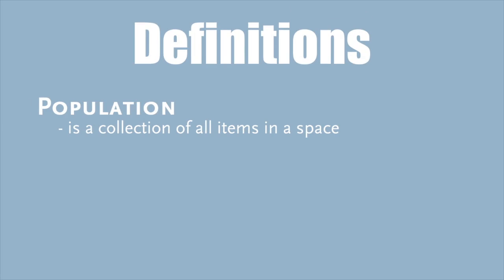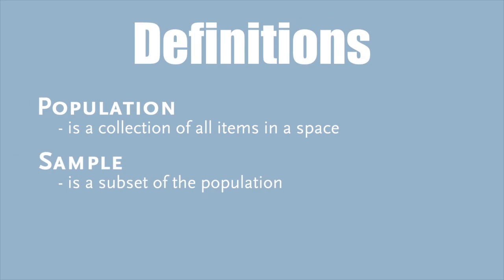A population is a collection of all items in a space, and a sample is a subset of the population. From a cost, practicality, resource, and timeframe perspective, collecting a sample is far more advantageous, as well as suitable, adequate, and effective, as long as the sample is random and representative of the population.